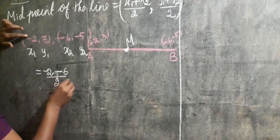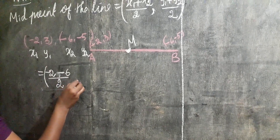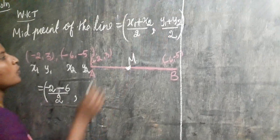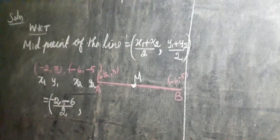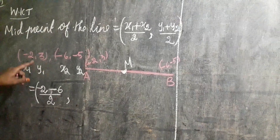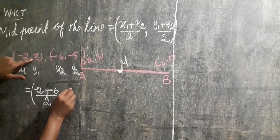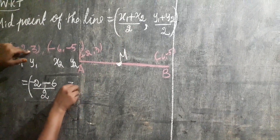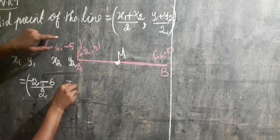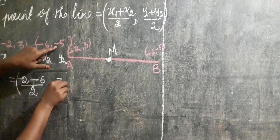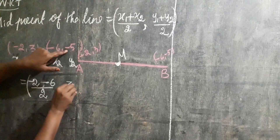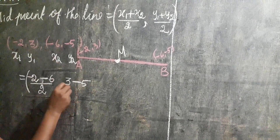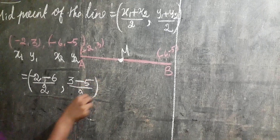Next, put the bracket symbol and comma. y1 — what is the value of y1? y1 is 3. And then plus, what is the value of y2? y2 is minus 5. So you directly put minus 5, divided by 2.